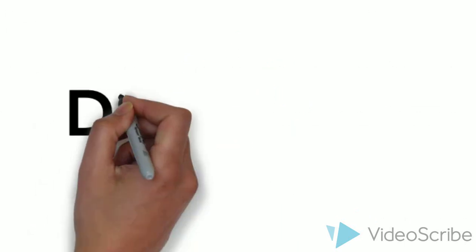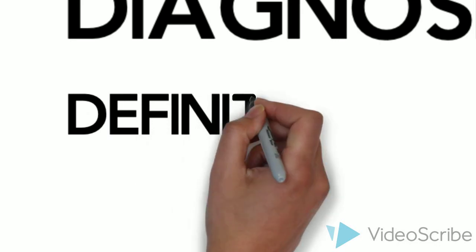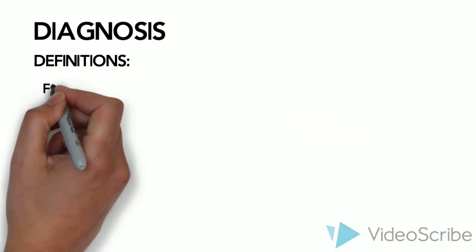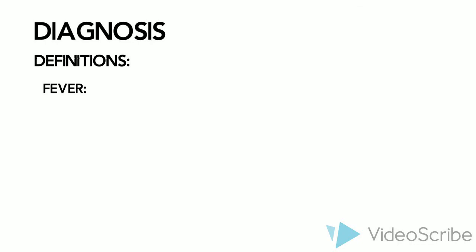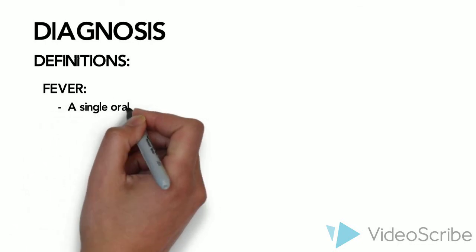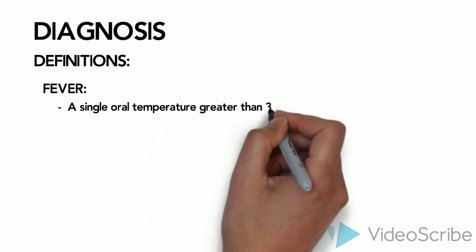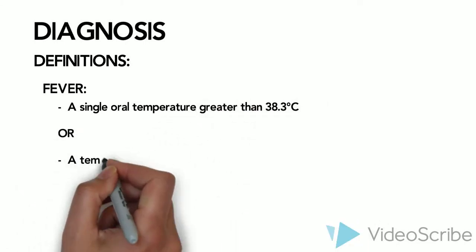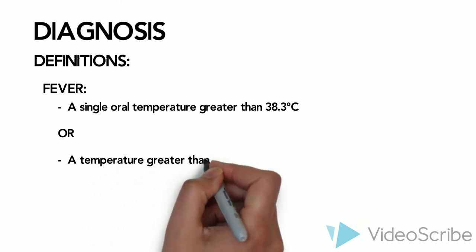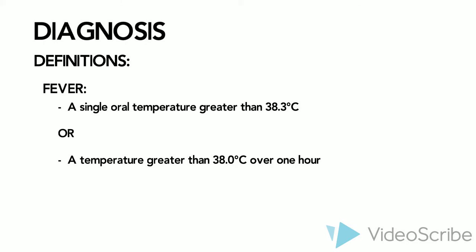To diagnose febrile neutropenia, it is first important to appreciate some definitions. The definition of fever, according to the Infectious Disease Society of America, is a single oral temperature greater than 38.3 degrees Celsius, or a temperature greater than 38 degrees Celsius sustained over one hour.